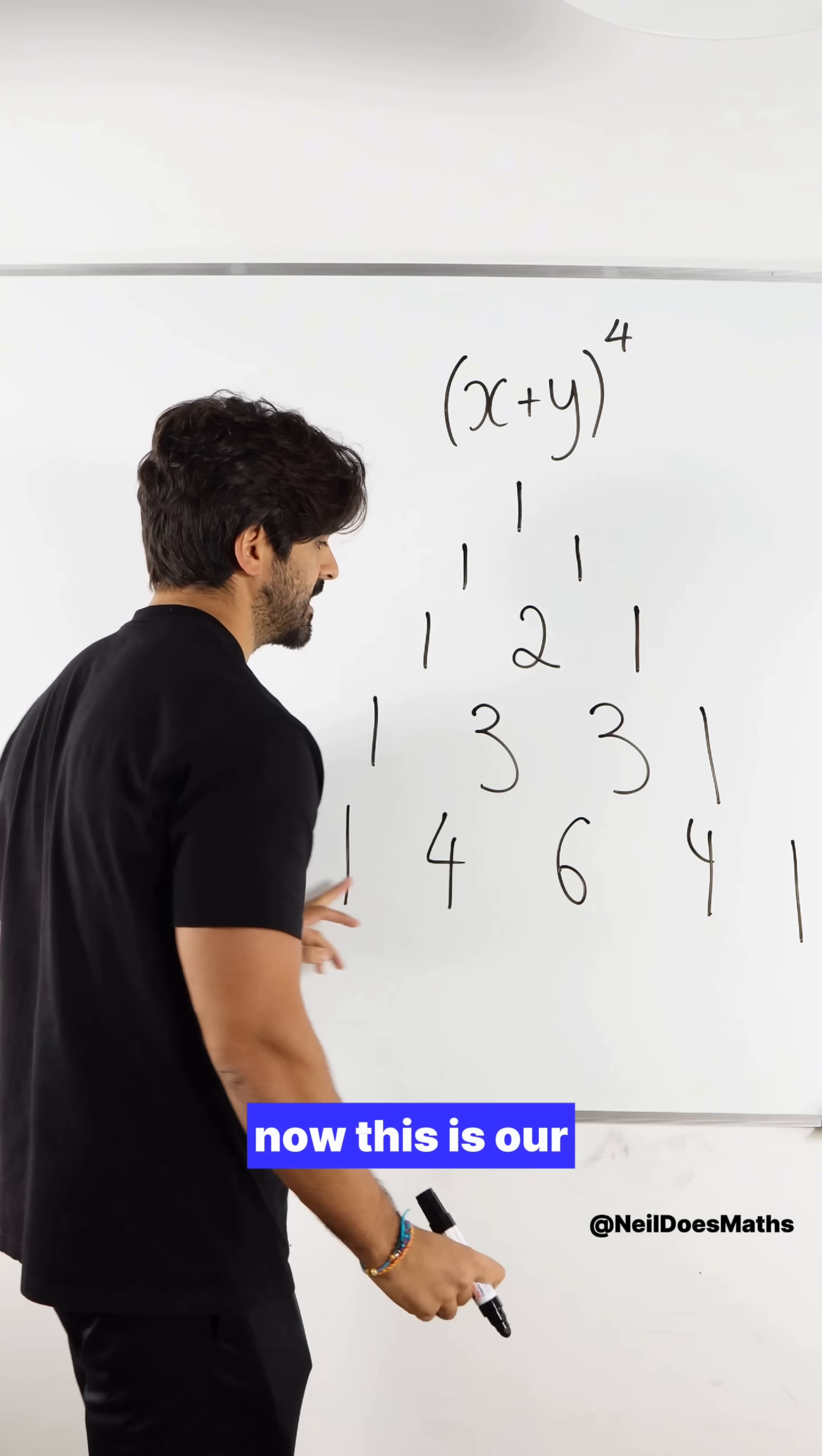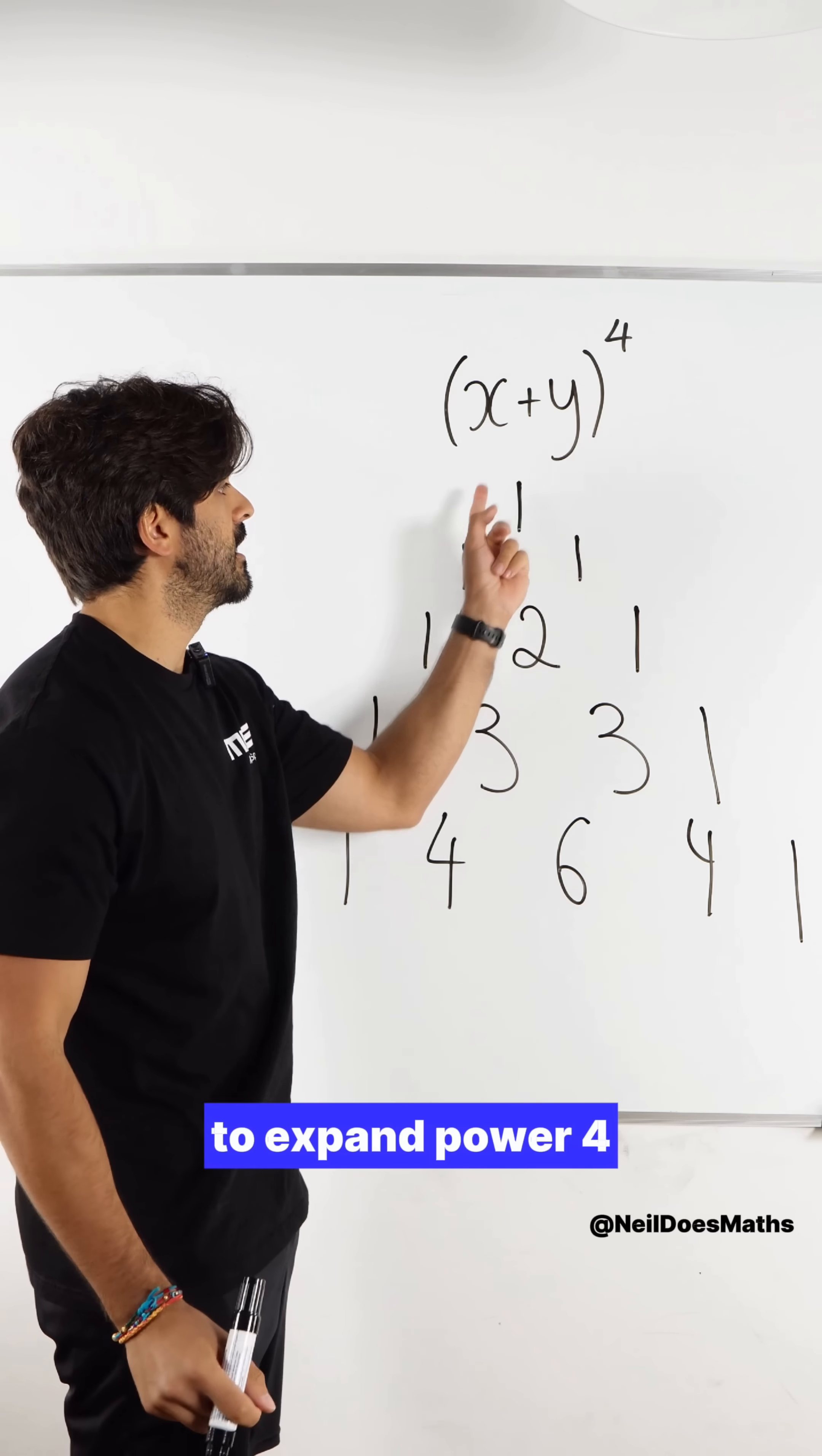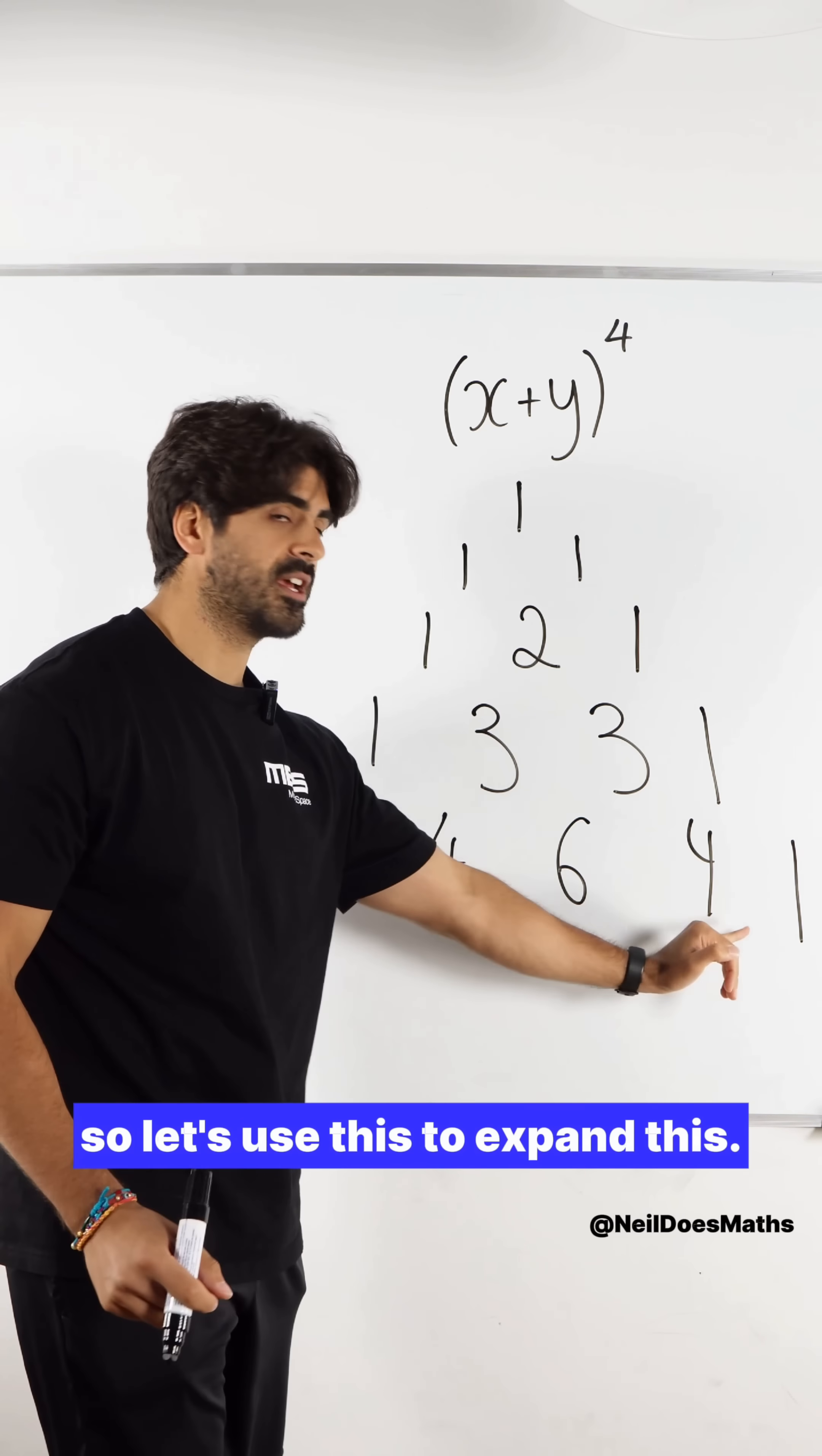Now this is our fourth line of Pascal's triangle which we use to expand power 4. This here is the zeroth term: 1, 2, 3, 4. So this would be power 0. So let's use this to expand this.